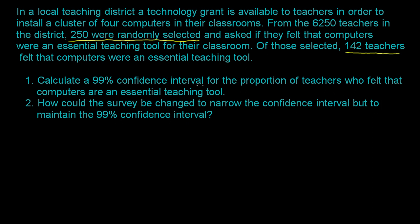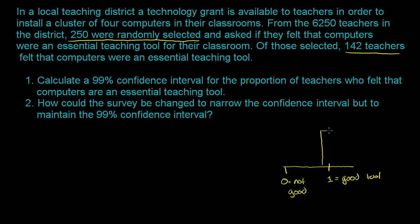Let's think about the entire population. We weren't able to survey all of them, but the entire population — some of them fall in the bucket we'll define as 1: they thought the computers were a good tool. And we'll define a zero value as a teacher that says not good. Some proportion of the total teachers think that it is a good learning tool, and the rest think it's a bad learning tool — 1 minus p.